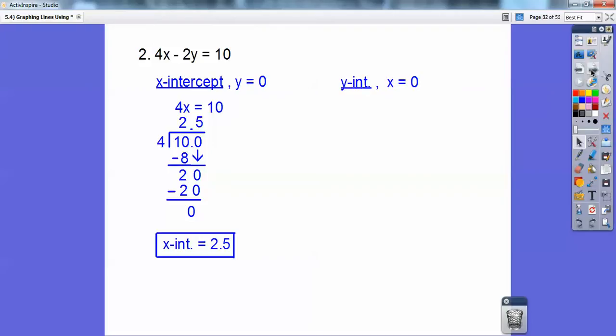Okay, the y-intercept, just let x equal 0. So it gets rid of the 4x, but you still have the negative in front of the 2y. And 2 goes into 10 five times, so it's negative 5.